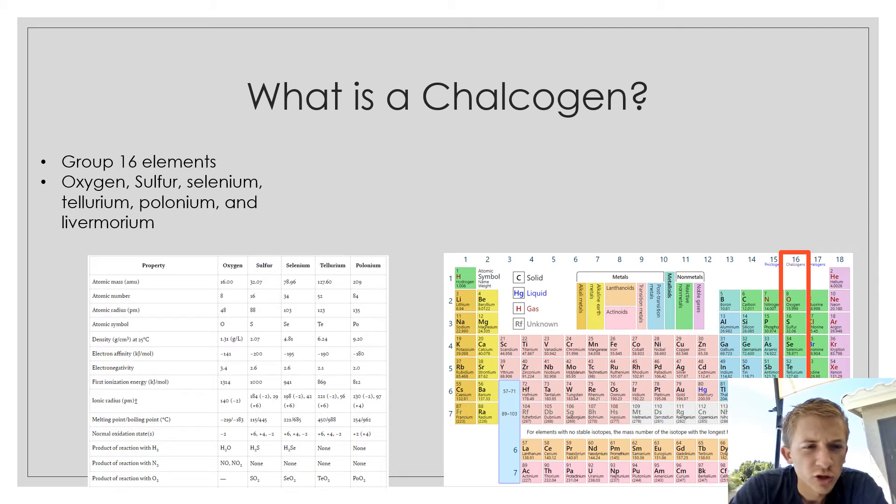So what is a chalcogen? Chalcogens are the group 16 elements: oxygen, sulfur, selenium, tellurium, polonium, and livermorium. On your right here you have the chalcogen groups that I highlighted, and then on your left are the various properties of the different elements, such as the atomic mass, atomic number, and radius.